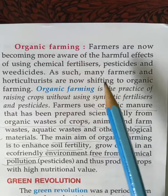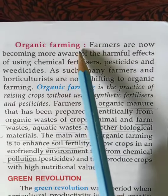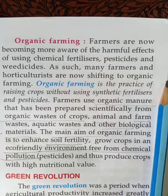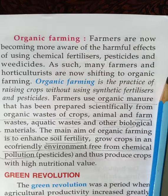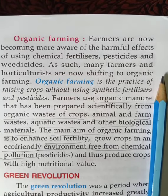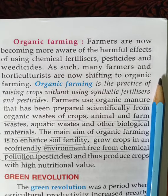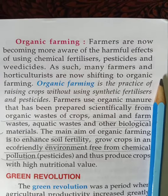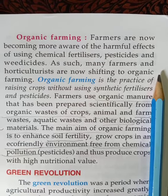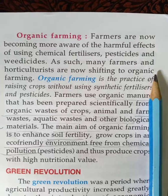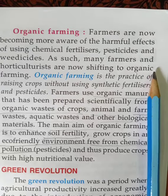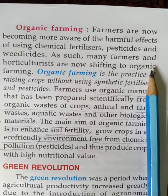Please write the definition of organic farming and horticulture, write the differences between kharif and rabi crops, what is a food crop, what is a cash crop, what is agriculture, and what do you mean by crop. All the information is already in your book, so please read the chapter carefully and write the answers. Thank you, children.